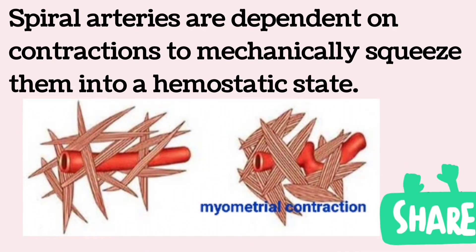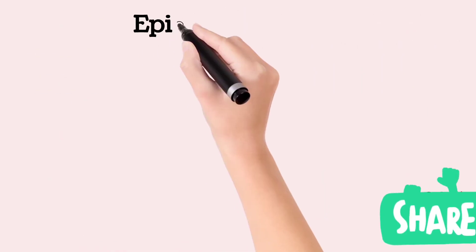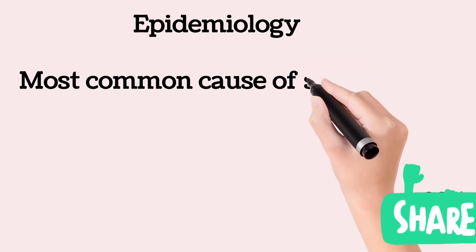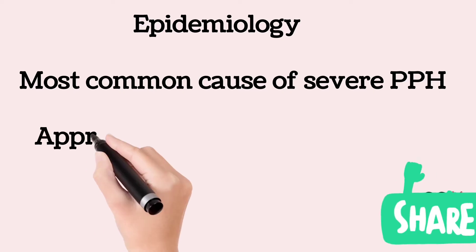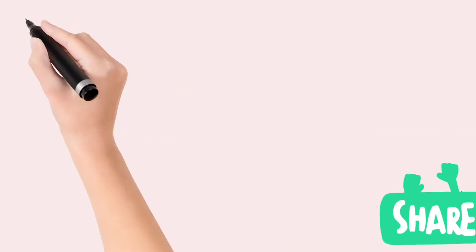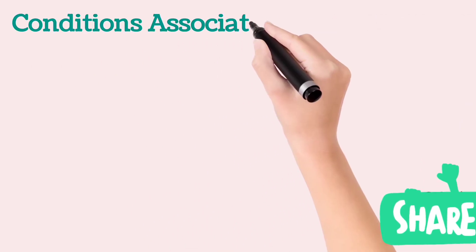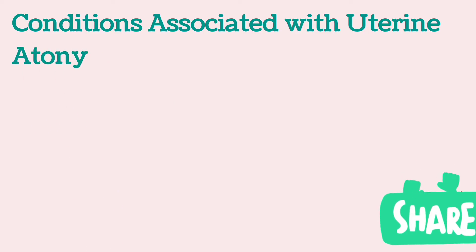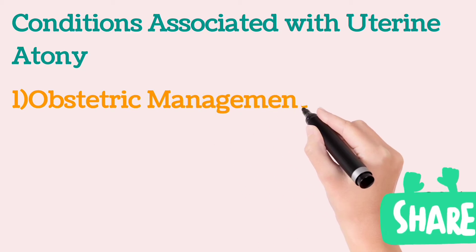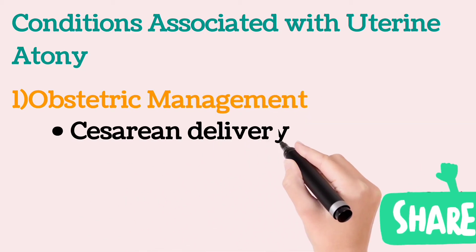Uterine atony is the most common cause of severe postpartum hemorrhage, accounting for approximately 80% of cases. The conditions associated with uterine atony are mainly classified into three types: obstetric management, obstetric conditions, and maternal comorbidities.